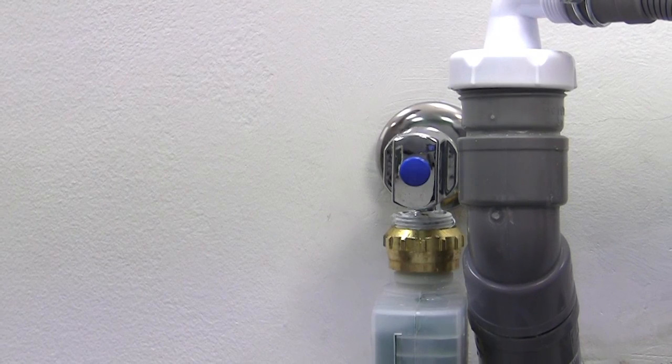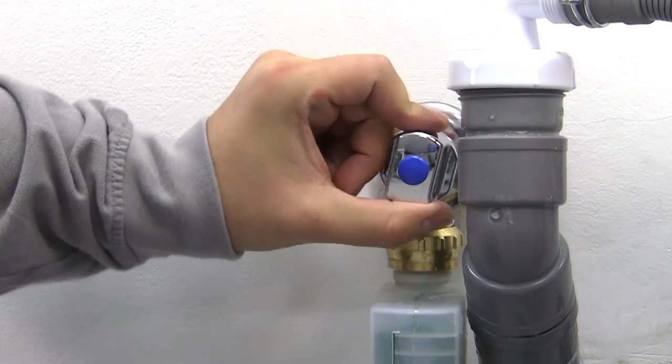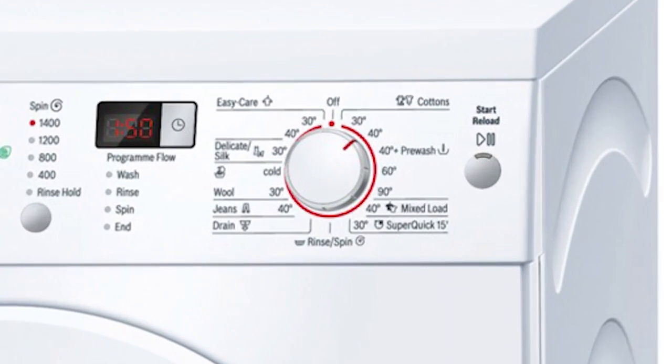This error can often be fixed and checked by yourself. First close the water tap and then run a 40 degree cycle for 40 seconds to release pressure on the hose.